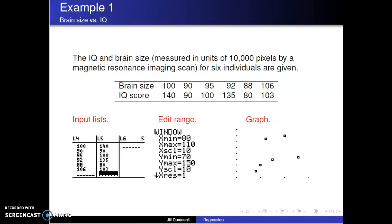The values of 80 to 110, counting by 10, cover my brain size data, and the values 70 to 150, counting by 10, cover my IQ scores.